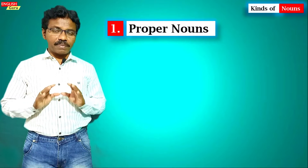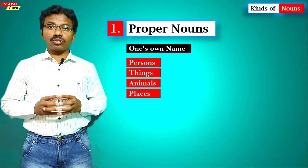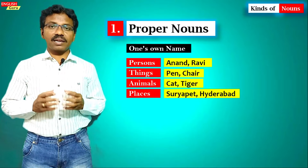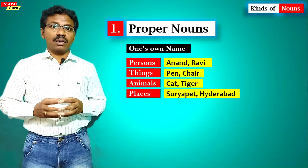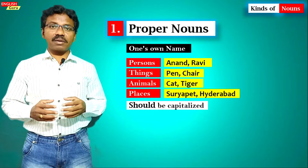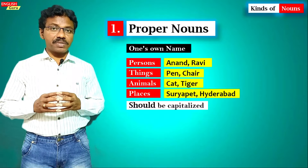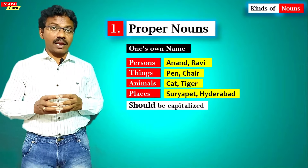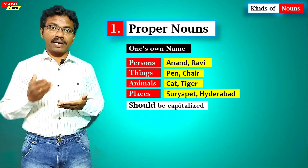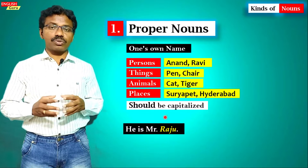The first kind is the proper noun. A proper noun is one's own name — the specific name of a person, thing, animal, or place. Persons like Ravi and Anand, things like a pen or chair, animals like cat, dog, or tiger, places like Hyderabad or Nalagonda. All proper nouns should be capitalized — they start with a capital letter whether at the beginning, middle, or end of a sentence.